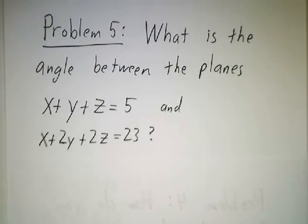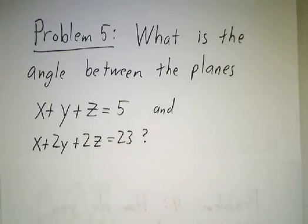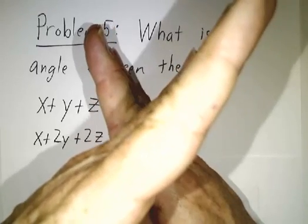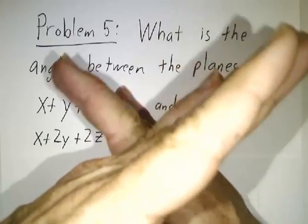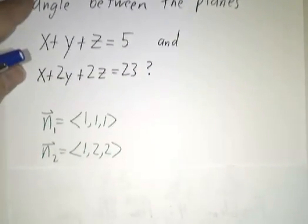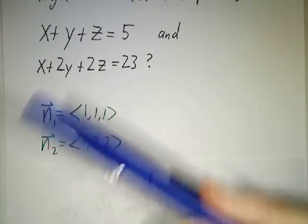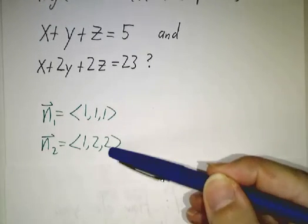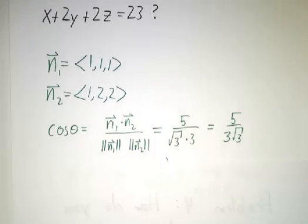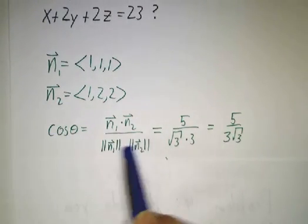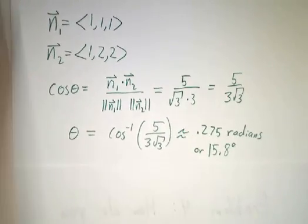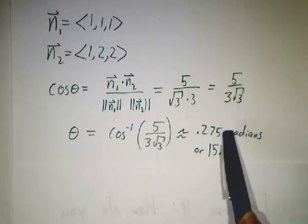If we have two planes that intersect at some angle, how do we figure out that angle? There are actually two angles — the small one and the large one — and we find the smaller of the two. The answer is that you use the normal vectors: the angle between the planes equals the angle between their normal vectors. You find the angle using the formula cos(θ) = (n₁ · n₂) / (|n₁| |n₂|). In this case, with normal vectors given, the cosine equals a specific value, and the angle is the inverse cosine of that, which is about 15.8 degrees.